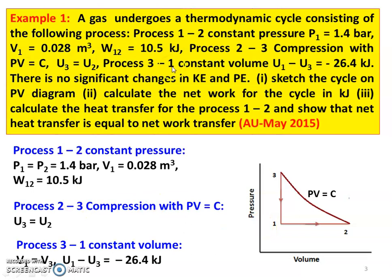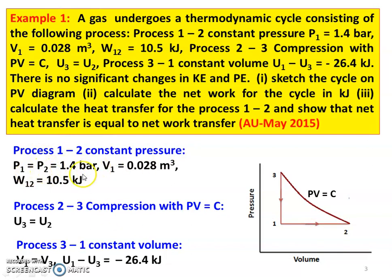We have to write down the given data and draw the diagram. This is a cycle with three processes on a PV diagram. For process 1 to 2, constant pressure process: P1 equal to P2 equal to 1.4 bar, V1 equal to 0.028 meter cube, W1 equal to 10.5 kilojoules. For process 2 to 3, compression process PV equal to constant, condition U3 equal to U2.